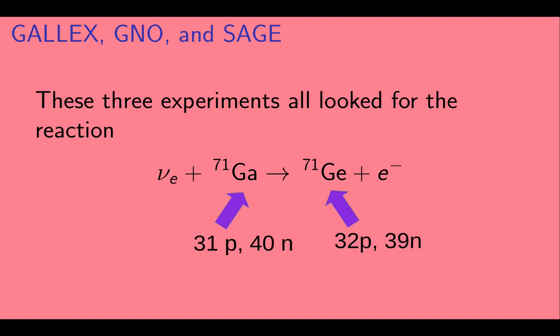A gallium-71 nucleus has 31 protons and 40 neutrons, while a germanium nucleus has 32 protons and 39 neutrons. So, again, just like before, we're seeing the reaction where an electron neutrino interacts with a neutron, turning it into a proton, and releasing an electron.